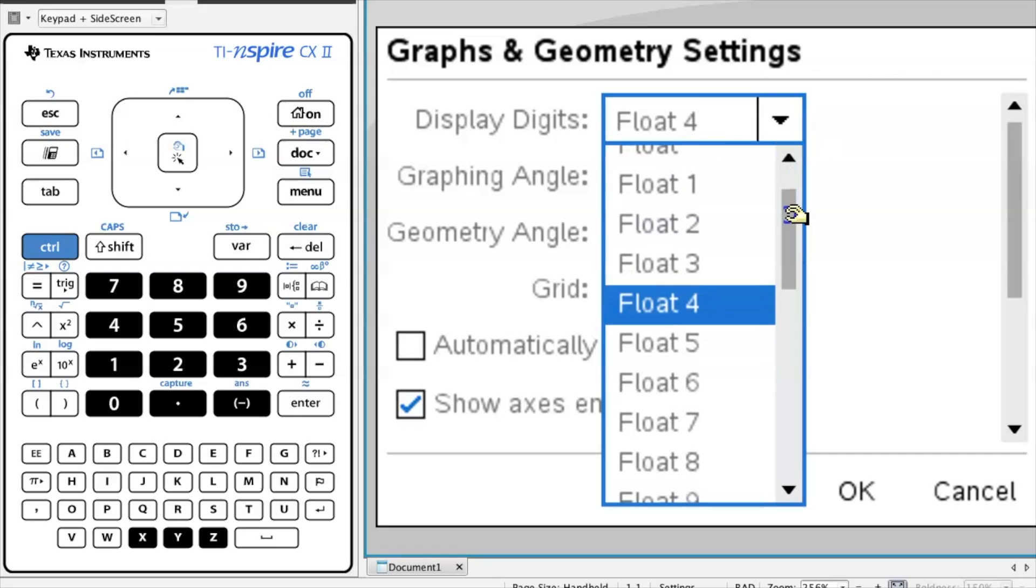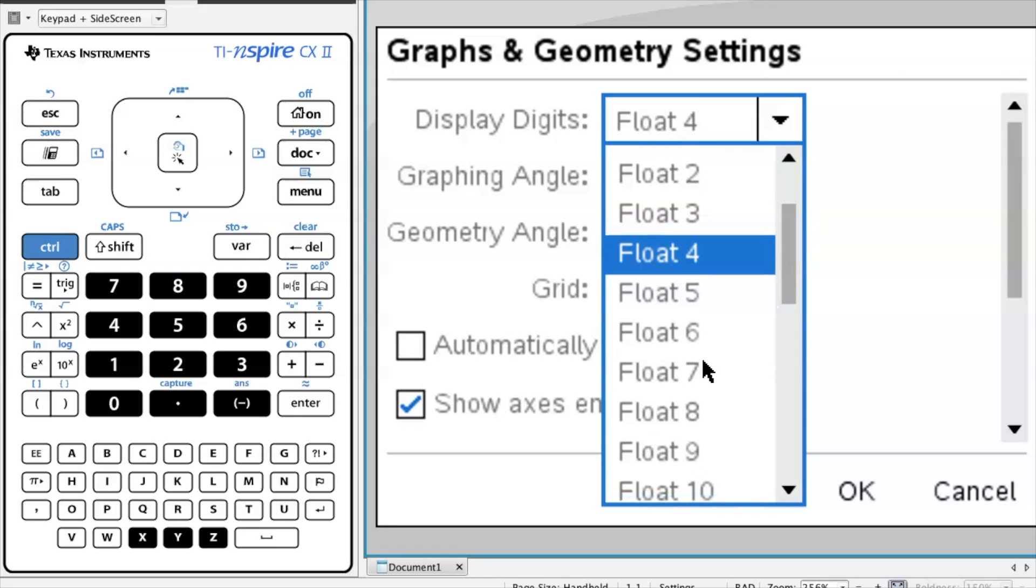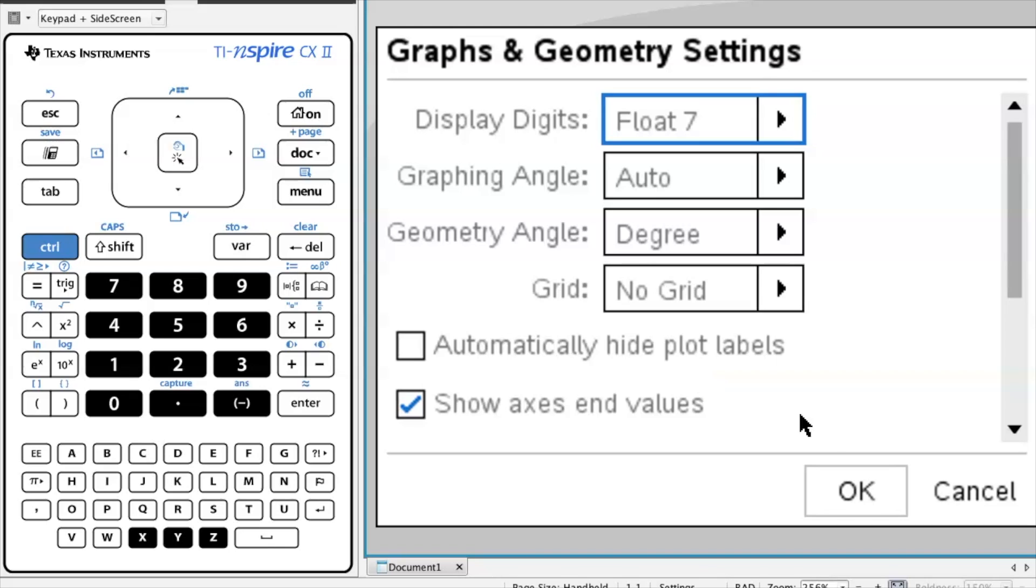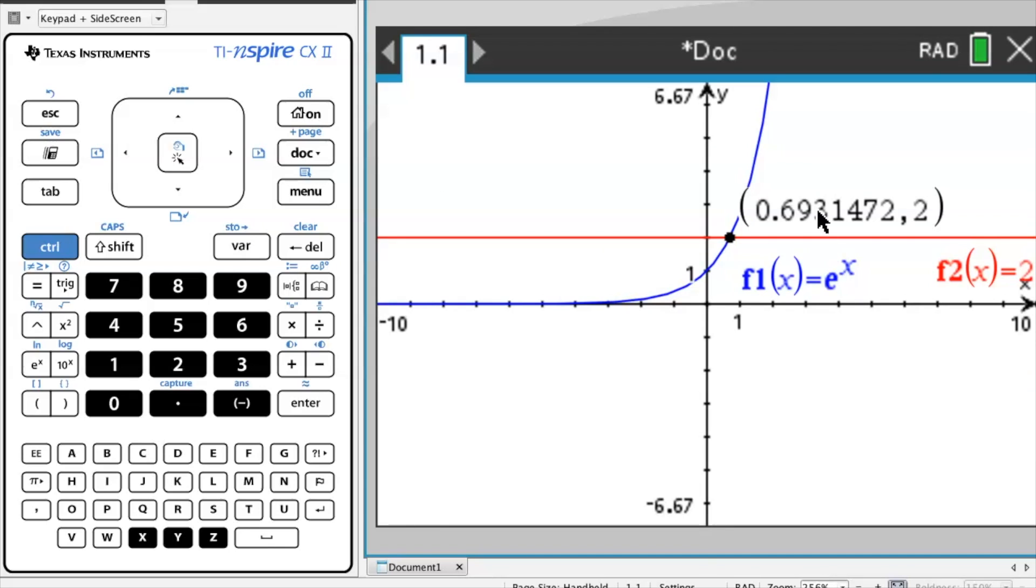So if you want to increase this, you want to have more decimal points, let's say I want 7, so I could select Float 7. Float 7 means it will have 7 numbers after the decimal point. And as you can see, I have 1, 2, 3, 4, 5, 6, 7.